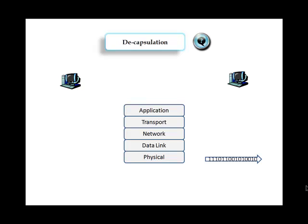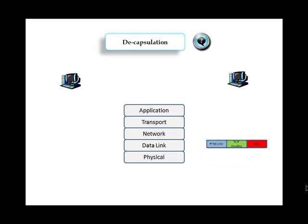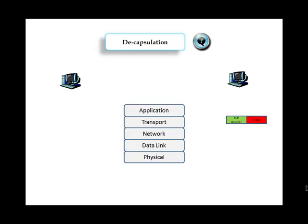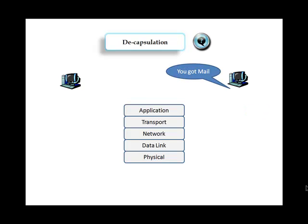Now let's look at the upward movement — decapsulation — at the receiving side. At the data link layer, the data is checked for errors; if there are none, the headers are stripped off and sent up to the network layer, where the IP header is stripped off. It is then sent up to the transport layer, where the TCP header is stripped off.